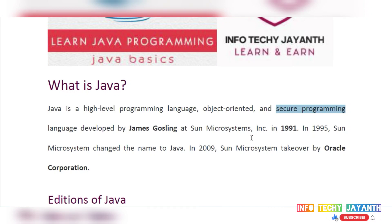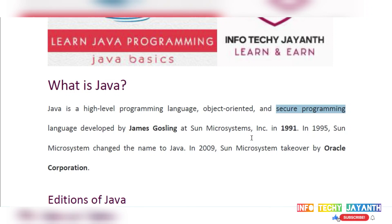Java is also a secure programming language. In C and C++, programming is pure pointer-related, and at the pointer level you can access unauthorized memory locations, making your application easier to hack. But in Java, everything is managed through garbage collection. You don't need to handle pointers directly — Java manages memory locations for you, making it a secure programming language.